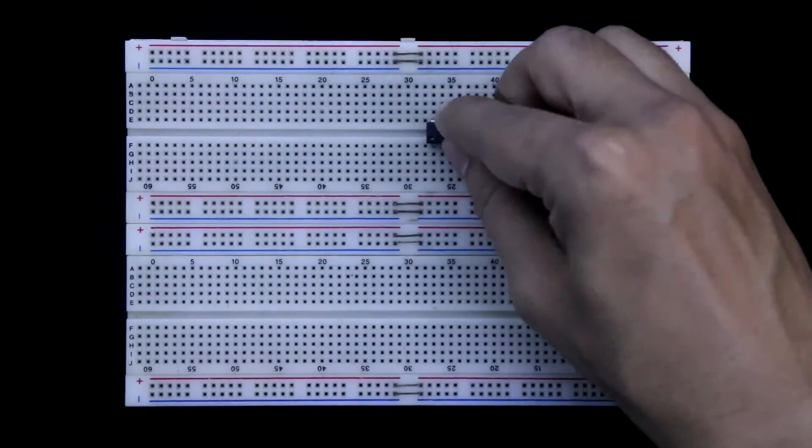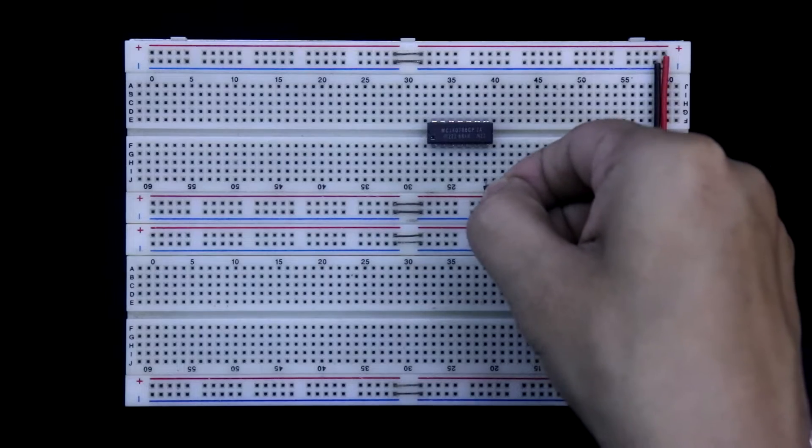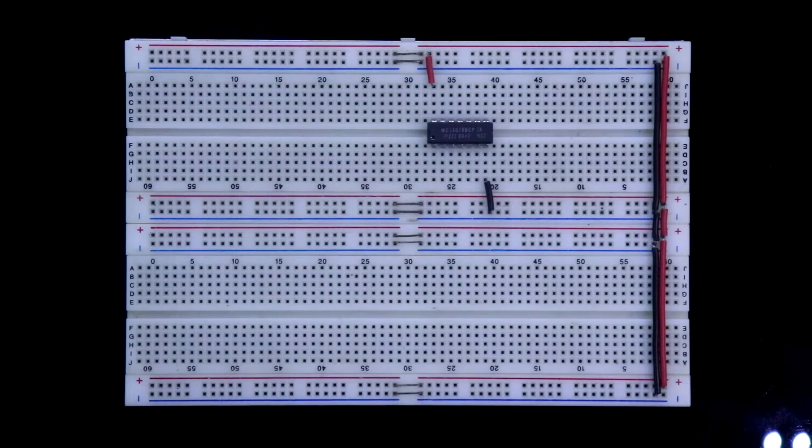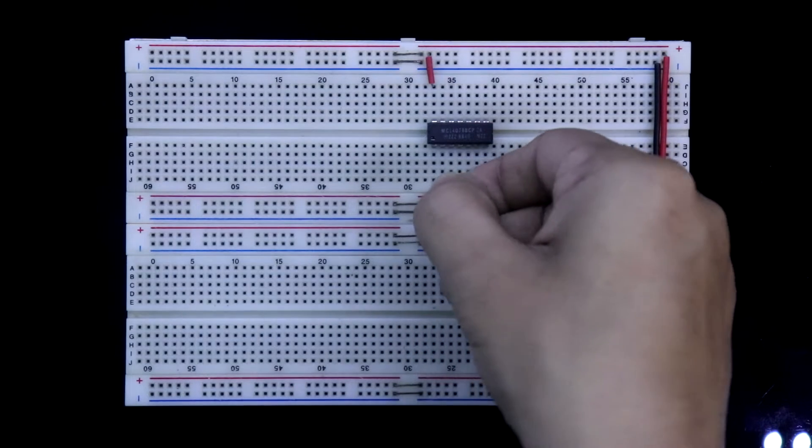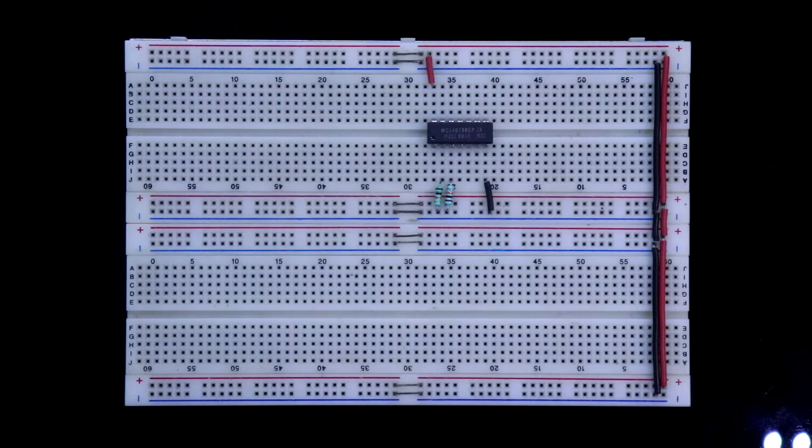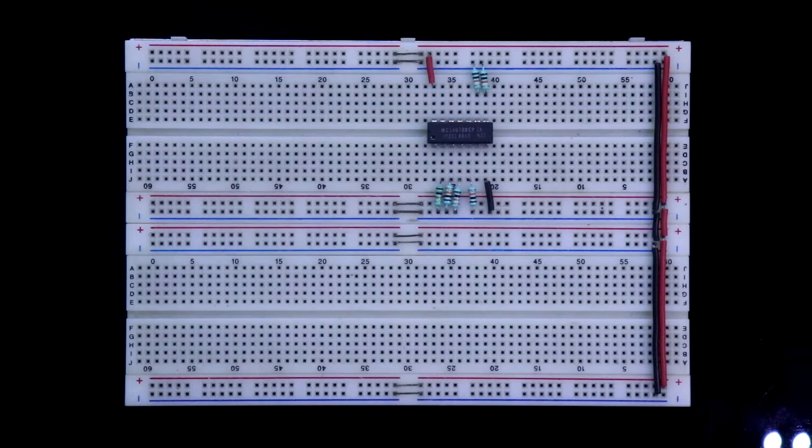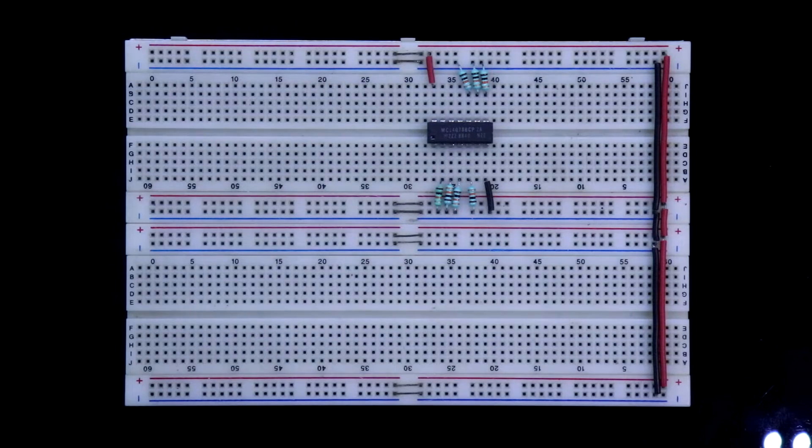CD4078, putting the IC, pin 7 is connected to the ground, pin 14 to positive rail. Connecting the pull-down resistor, pin 2, 3, 4, 5, 9, 10, 11, 12.